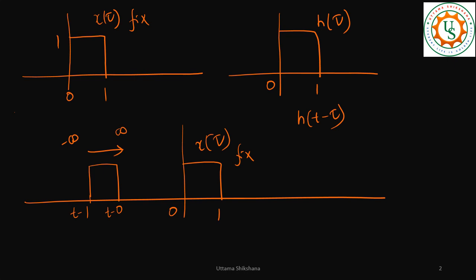For the final resultant sequence, there's a shortcut to find the range of values. You take the left indices of both sequences and add them: 0 + 0 = 0. Then the right indices: 1 + 1 = 2. So the resultant convolution signal lies within the range [0, 2].